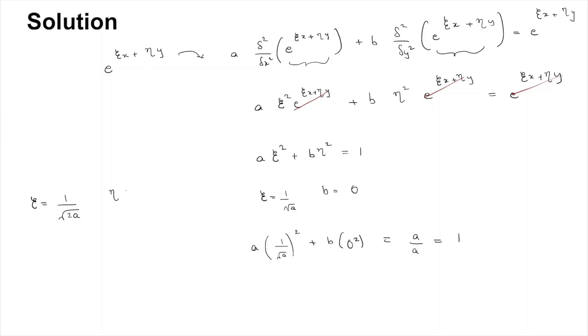For zeta = 1/√(2a) and eta = 1/√(2b), we will get a·(1/√(2a))² + b·(1/√(2b))², which works out to be a/(2a) + b/(2b), which is 1/2 + 1/2, which is 1.